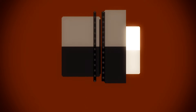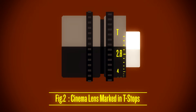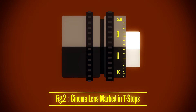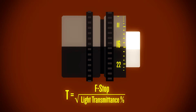Cinema lenses are marked with T-stops. The T-number is determined by taking the F-number and dividing by the square root of the percentage of transmittance of the lens. There is a marked difference.